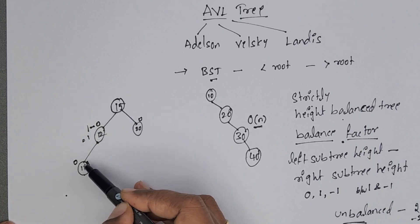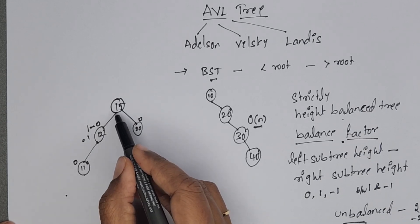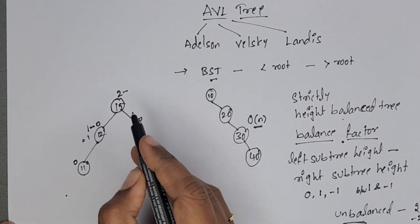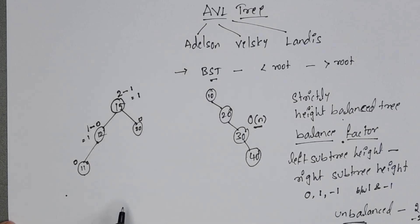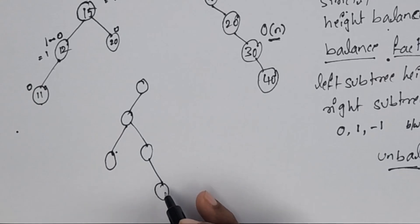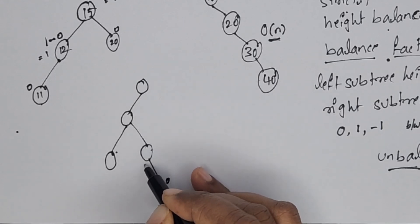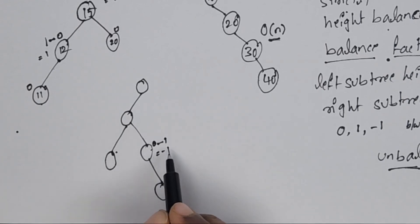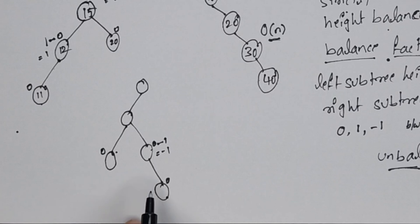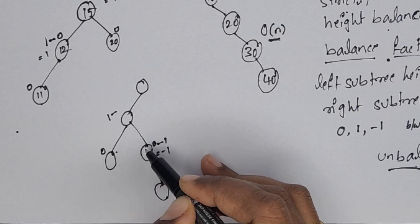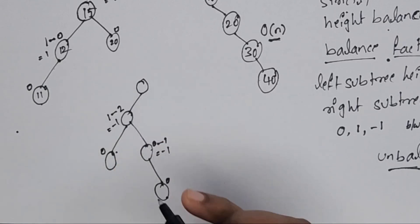For node 15, the left subtree has 2 edges, so left subtree height is 2. The right subtree has only one edge, so 2 minus 1 equals 1. In another example, this node has balance factor 0. For another node, there is no left subtree, so 0 minus right subtree height of 1 gives minus 1. For the root, the left subtree height in the longest path is 3, and there is no right subtree, so the balance factor is 3 — which is unbalanced.